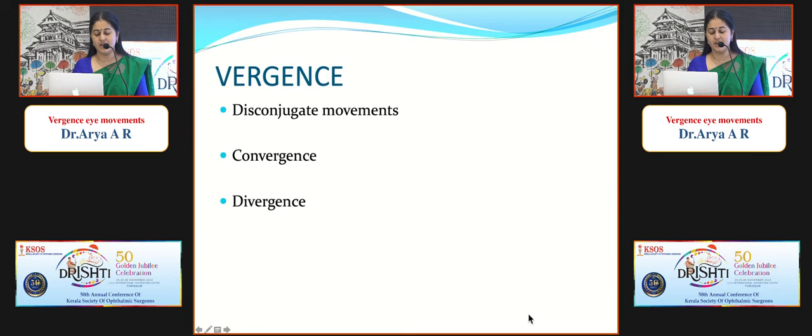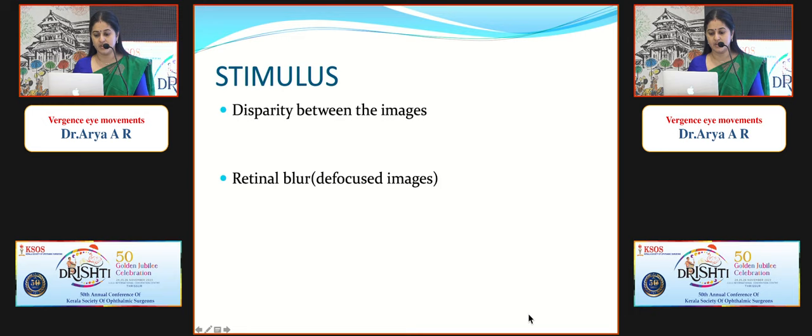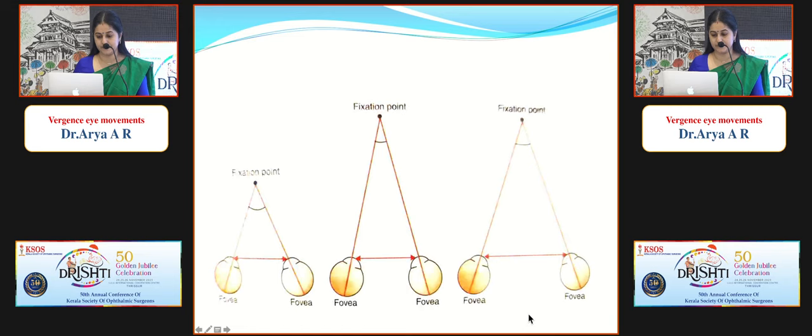Vergence eye movements are where both eyes move in opposite directions — these are disconjugate movements. Vergence can be convergence or divergence. The two primary stimuli for disjunctive eye movements are: first, disparity between the location of images on the two retinas, which produces diplopia and leads to fusional vergence movements; and second, retinal blur or defocused images, which leads to accommodation-linked vergence movements.